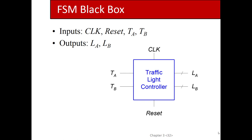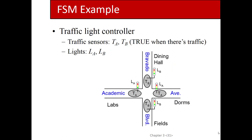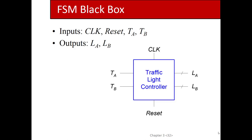Looking at the traffic light controller from the top level, you've got a clock and a reset — every FSM is going to have that. TA and TB are the inputs on the left and LA and LB are the outputs on the right. TA is whether there's traffic on Academic, TB is whether there's traffic on Bravado; LA and LB are what color the traffic light is.